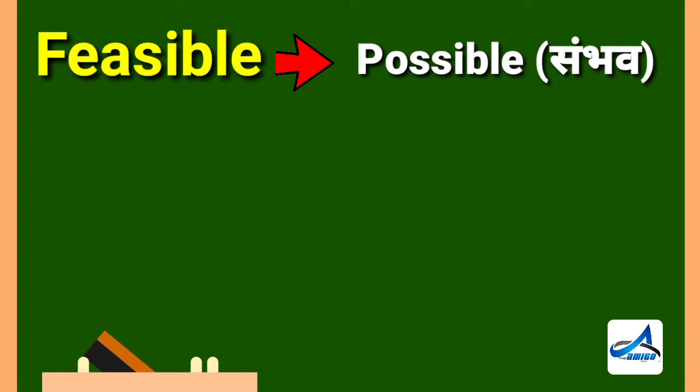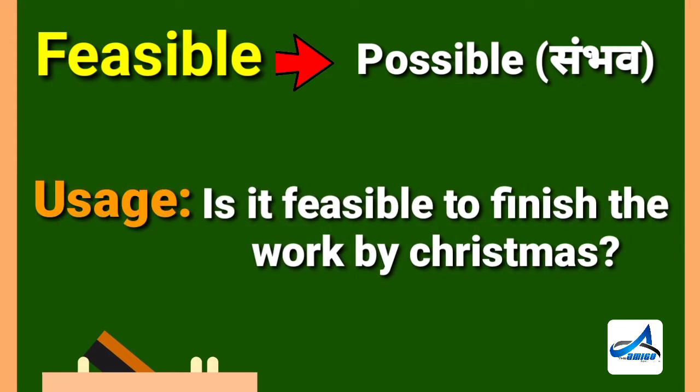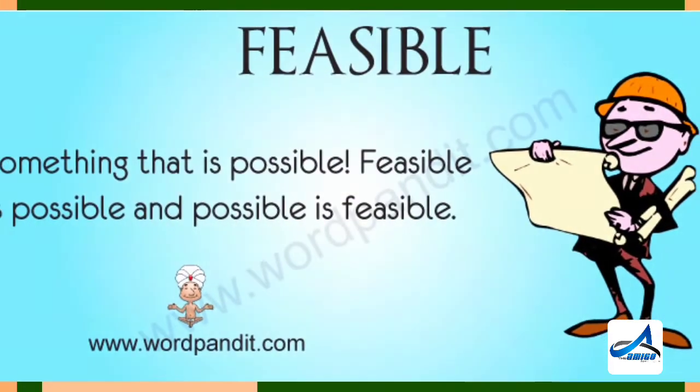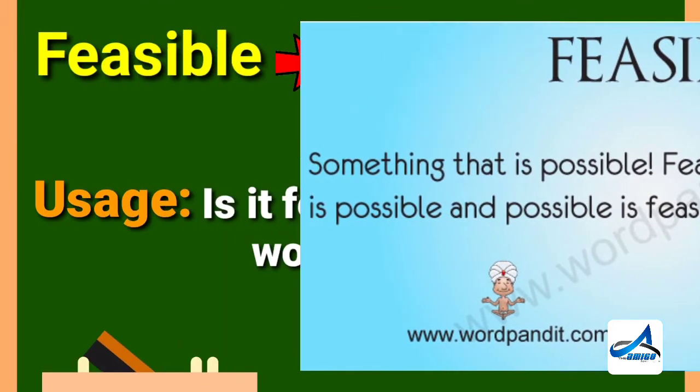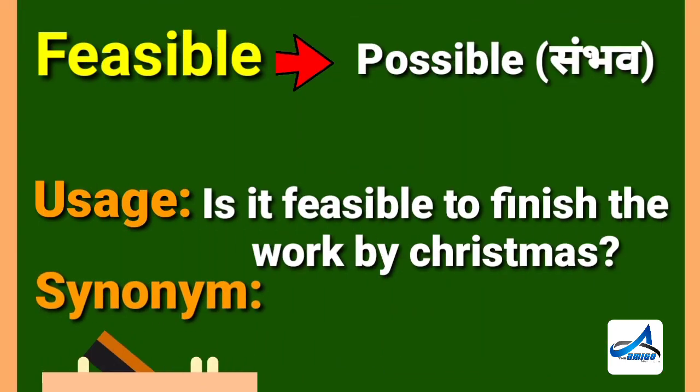The next word is feasible. Feasible means possible. Its Hindi meaning is 'sambhav.' Now look at its sentence: is it feasible to finish the work by Christmas? Its synonym is accessible.